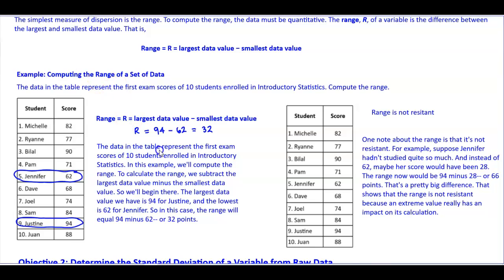In summary, the data in the table represent the first exam scores of 10 students enrolled in introductory statistics. In this example, we computed the range. To calculate the range, we subtract the largest data value minus the smallest data value. So the largest data value is 94. The lowest data value is 62. And in this case, the range will be 32 points.